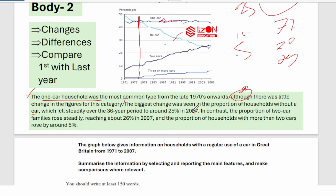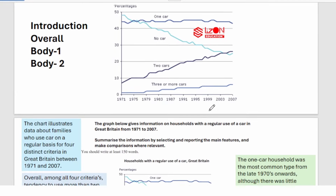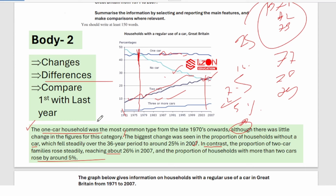Then use 'in contrast' for the opposing trend: 'In contrast, the proportion of two-car families rose steadily, reaching about 26% in 2007, and the proportion of households with more than two cars rose by around 5%.' If you want to add one or two more sentences, you can mention where lines crossed — for example, they crossed in 2003. But actually you don't need to add more — your body 2 is ready.